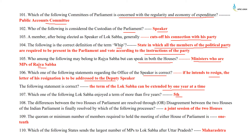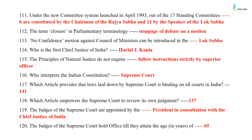How are disagreements between the two houses of the Indian Parliament finally resolved? By a joint session of the two houses. The quorum or minimum number of members required to hold a meeting of either house of Parliament is one-tenth. Which state sends the largest number of MPs to Lok Sabha after Uttar Pradesh? It is Maharashtra. Under the new committee system launched in April 1993, out of the 17 standing committees, six are constituted by the Chairman of the Rajya Sabha and eleven by the Speaker of the Lok Sabha. The term 'closure' in parliamentary terminology means stoppage of debate at an honour motion. A no-confidence motion against the Council of Ministers can be introduced in the Lok Sabha.